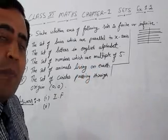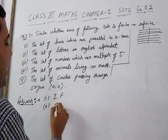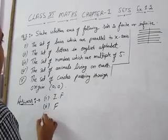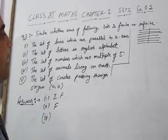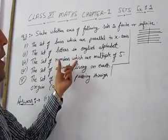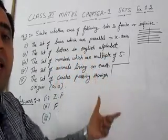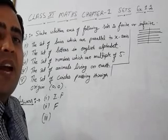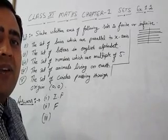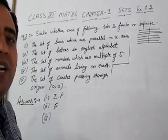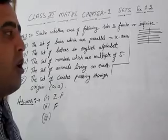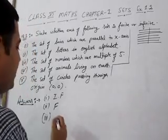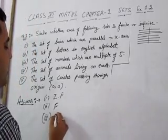The second part is the set of letters in the English alphabet. We know that the English alphabet contains 26 letters from A to Z, therefore it is a finite set. The third part is the set of numbers which are multiples of 5 — these are 5, 10, 15, 20, 25, and so on. These are infinite in number, therefore this is an infinite set.